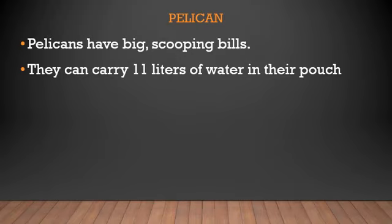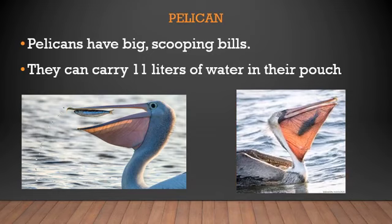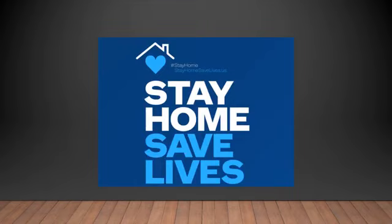One special bird is the pelican. Pelicans have big scooping bills. Similar to ducks and geese, their beaks are called bills, but the pelican's pouch is very huge — as you can see in the picture. They can carry up to 11 liters of water in their pouch. The pouch is extendable and very large — this is a speciality of the pelican's beak, called the scooping bill.